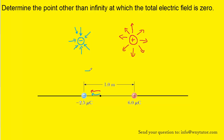The only way we can get the electric field lines to cancel is if one line pointed to the left and the other pointed to the right. In that situation, they could cancel each other out and produce a total electric field of zero. We can't achieve that for any points situated between the positive and the negative charge.